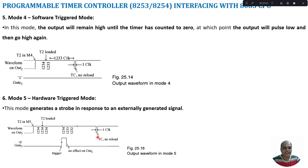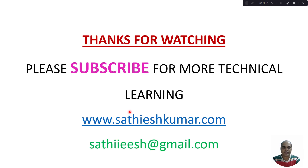These are the 6 different modes supported by your programmable timer controller. In this tutorial, I have discussed how to interface a programmable timer controller IC 8253 or IC 8254 with your 8085 microprocessor. Thanks for watching. Please subscribe for more technical learning.